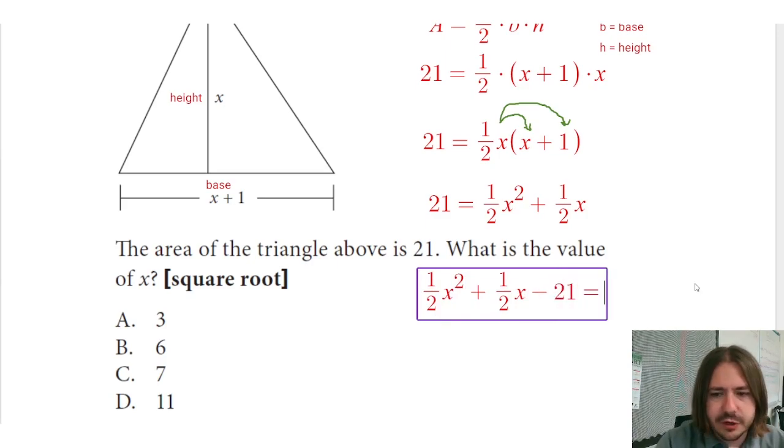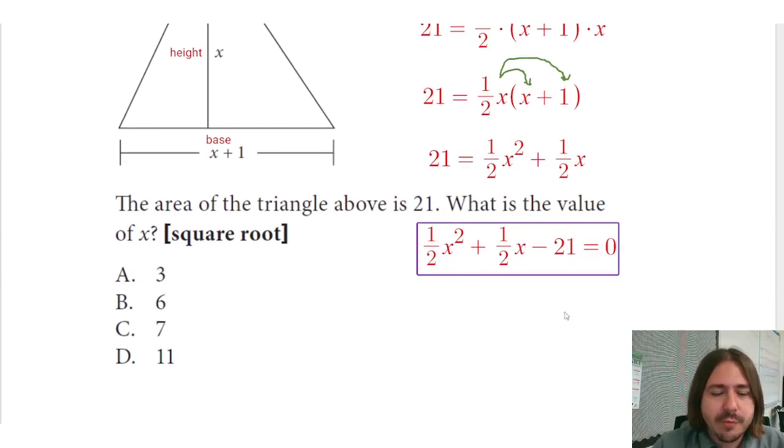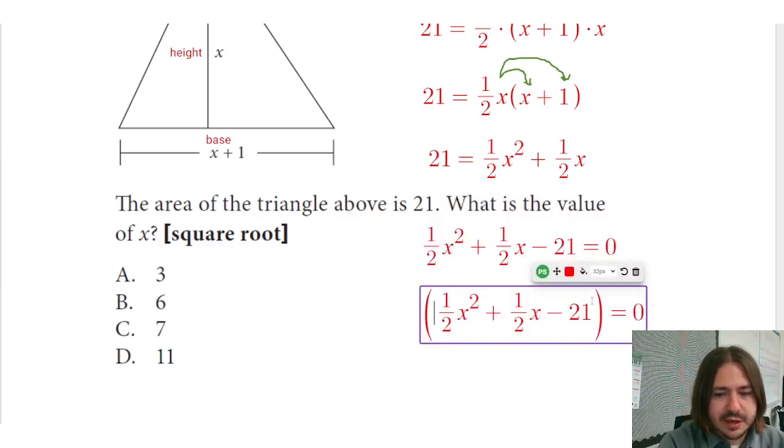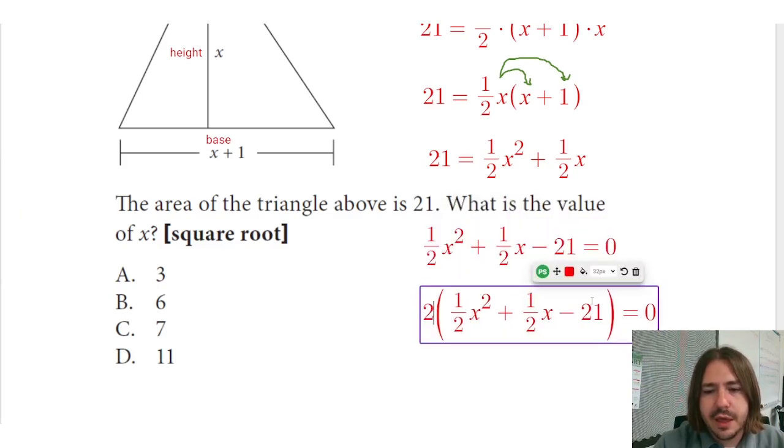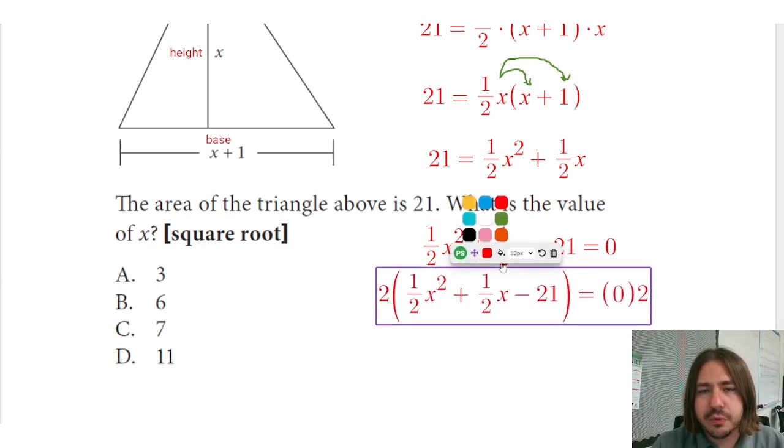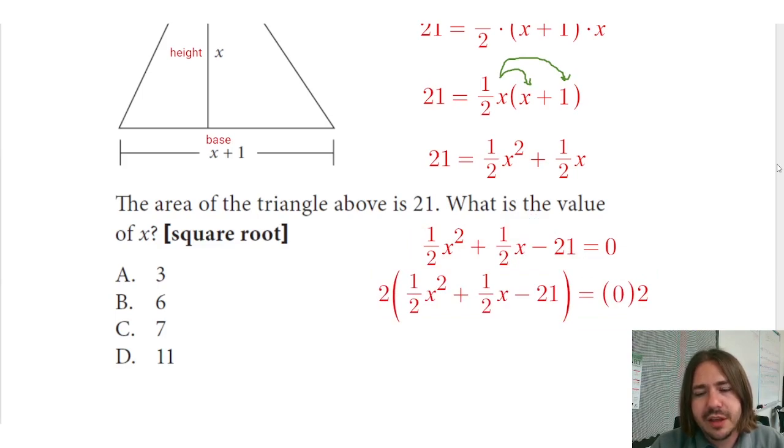Now the fractions, I'm going to try to get rid of, kind of annoying to have those fractions in there, and factoring will be way easier without them. So I'm going to multiply both sides by 2. Just to show you what I'm doing here, I'm going to multiply this side by 2 and this side by 2. I'm allowed to do that because I'm doing it to both sides.